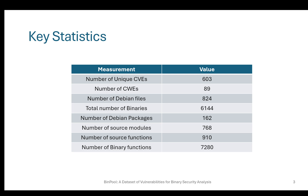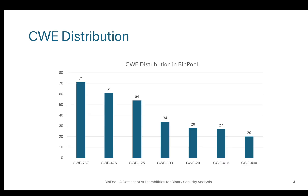at the end we had more than 7000 binary functions. In this slide, you can see the CWE distribution in BinPool. Here are the most frequent and important CWEs in BinPool. BinPool covers the most important CWEs in real-world programs, which are buffer overflow, integer overflow, null pointer dereference, and use after free.